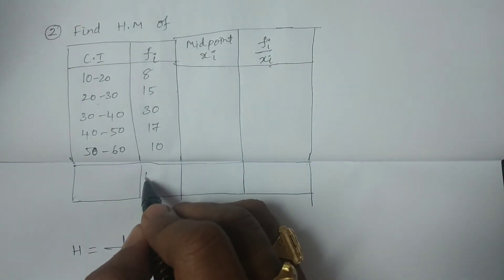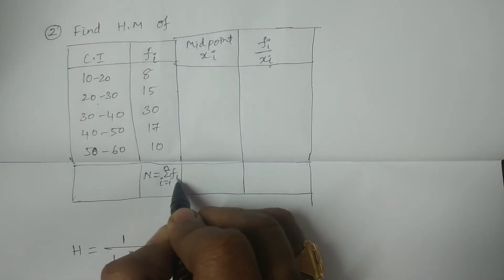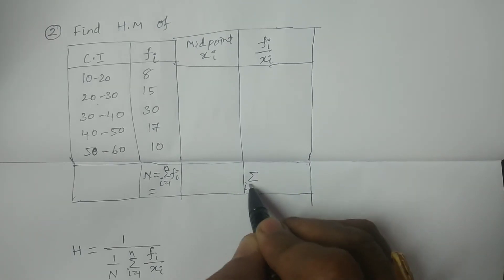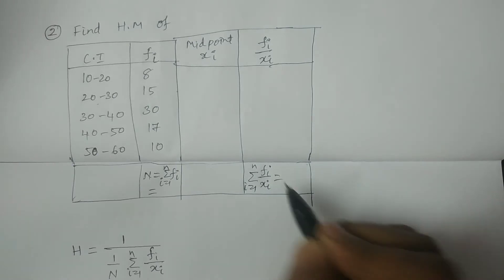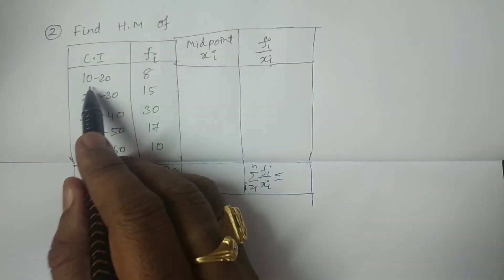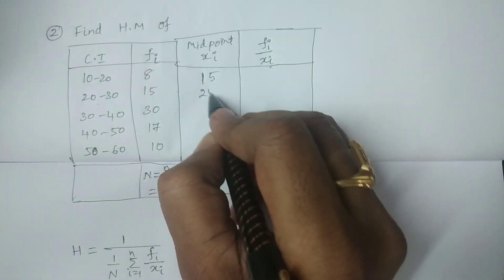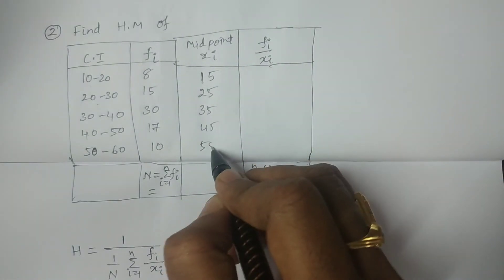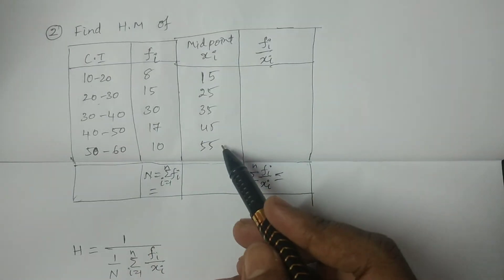Now calculate the midpoints xi for each class interval: 10–20 gives midpoint 15, 20–30 gives 25, next gives 35, then 45, and 55. These are the midpoints of the class intervals.